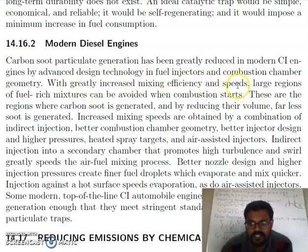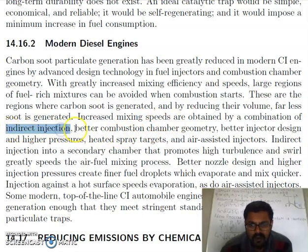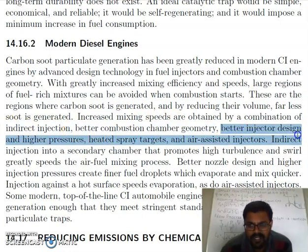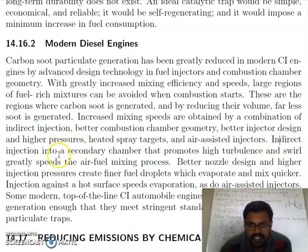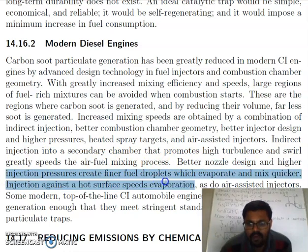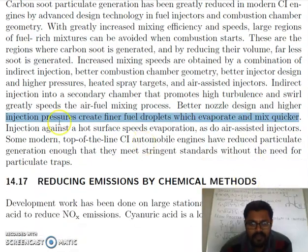With greatly increased mixing efficiency and speeds, large regions of fuel-rich mixtures can be avoided when combustion starts. With proper engine design — such as indirect injection, improved combustion chamber geometry, better injector design, higher pressures, heated surface targets, and air-assisted injectors — the engine can work without producing soot particles and other pollutants. Indirect injection into a secondary chamber promotes high turbulence, which greatly speeds the air-fuel mixing process. Better nozzle design and higher injection pressures create finer fuel droplets that evaporate and mix more quickly. Injection against a hot surface speeds evaporation, as do air-assisted injectors.